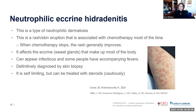Neutrophilic eccrine hidradenitis is a type of neutrophilic dermatosis usually associated with chemotherapy — when chemotherapy stops, the rash goes away. It affects the eccrine sweat glands, so the rash can appear anywhere on the body, can look infectious, and some patients have fevers. Definitive diagnosis is by skin biopsy, and it is generally self-limiting, though sometimes requires steroids used cautiously. Biopsy would also rule out bacterial or viral infection. For those whose condition is chemotherapy-related, treatment with dapsone may be given before chemotherapy and 14 days after completion to prevent recurrence.